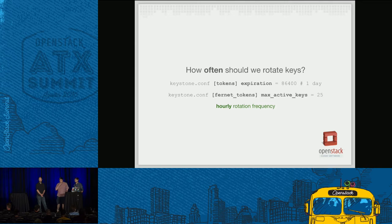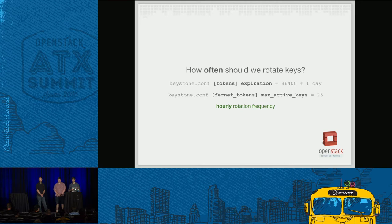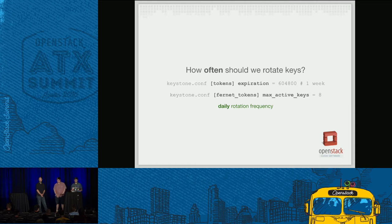Here's an example: if you rotate hourly with a token expiration of one day, you need a max active key count of 25. If you go below 25 you'll be removing keys used to encrypt tokens that are still valid — poor user experience. You can set it higher than 25, but you'll just have unused keys in your repository. Another example: weekly tokens with daily rotations need a max active key count of at least 8. And with 90-day tokens and monthly rotation, you need at least 5.